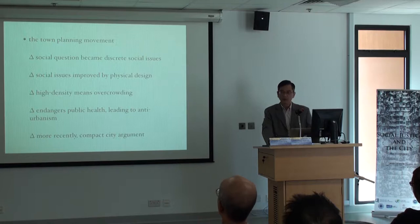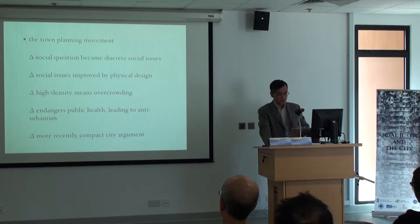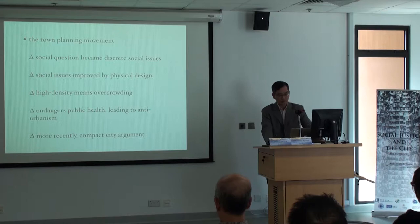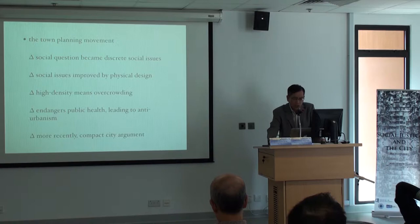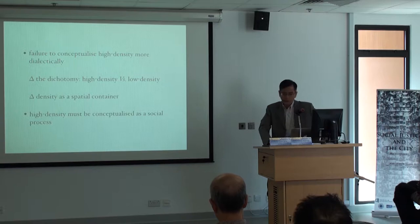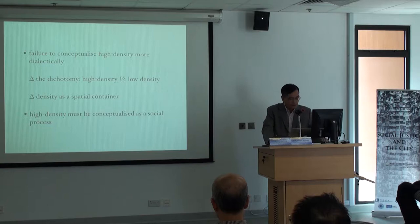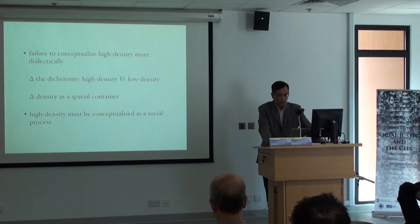Of course, more recently there is another development — swinging back to the so-called compact city argument, which is really based on anti-urbanism. What we would like to argue is that seeing high density as a thing, seeing it as a container, couldn't see things more dialectically. For example, we try to dichotomise high density versus low density. As Jackie's case has shown, even in the city centre, people with low space can be doing okay. So density shouldn't be seen as a container.